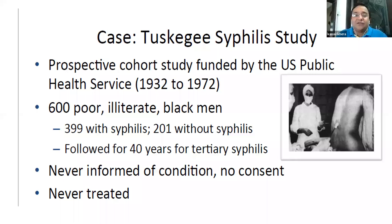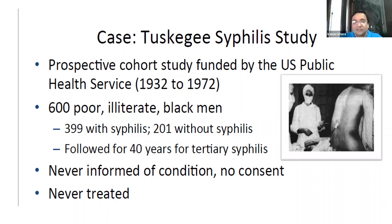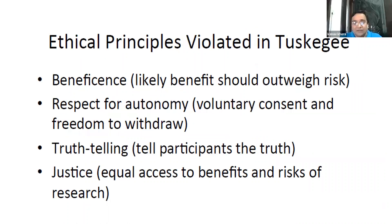When penicillin was discovered in the early 20th century and became the drug of choice for syphilis, these patients were never offered that treatment. By law, if a patient is participating in a clinical trial and a new drug therapy becomes available, we have to offer that treatment and make the patient aware that it is now available. But in the Tuskegee study, the patients were never offered any treatment that could have cured syphilis.